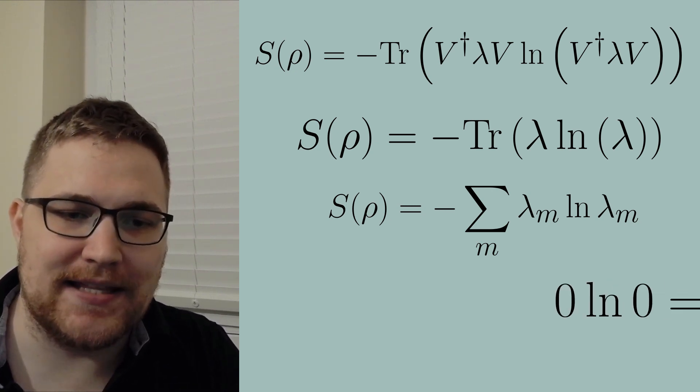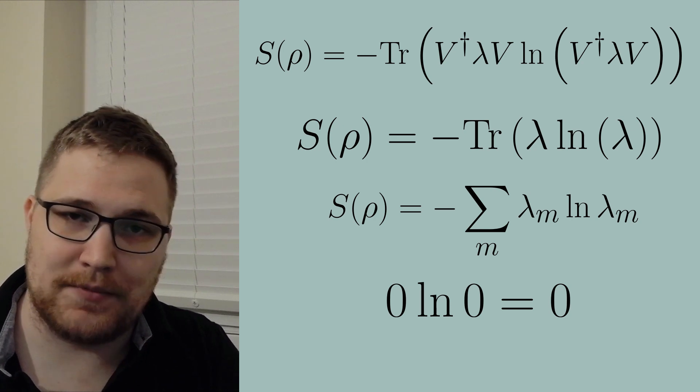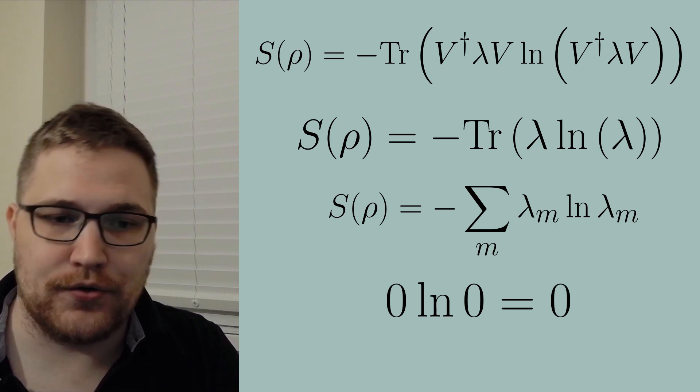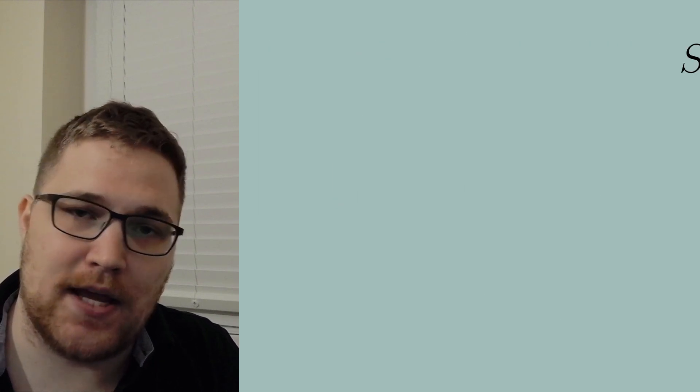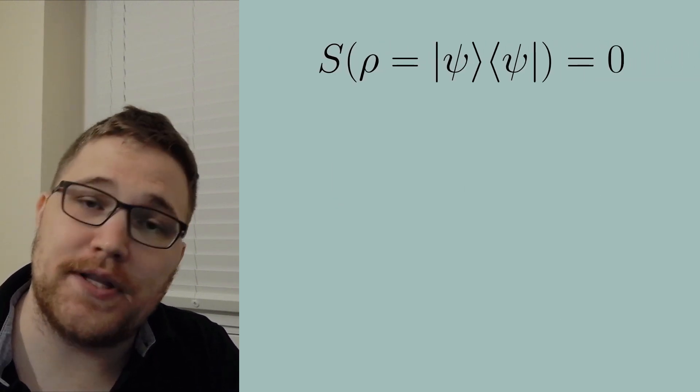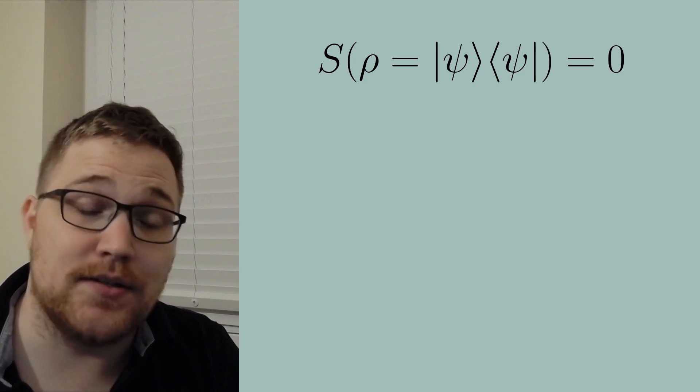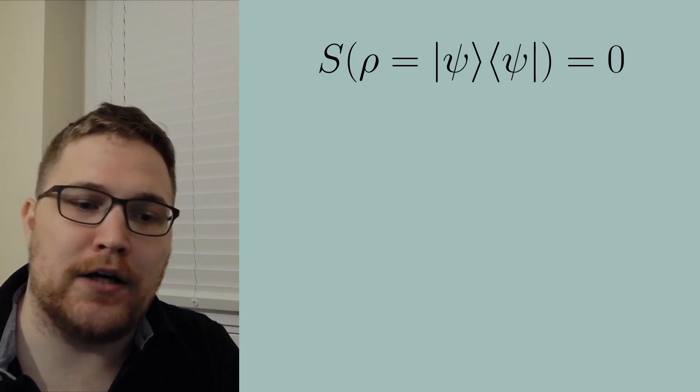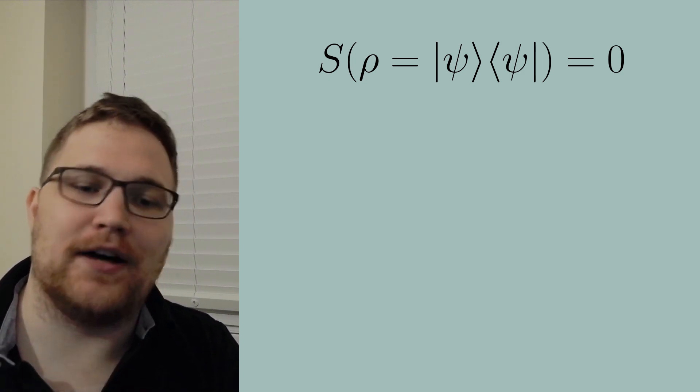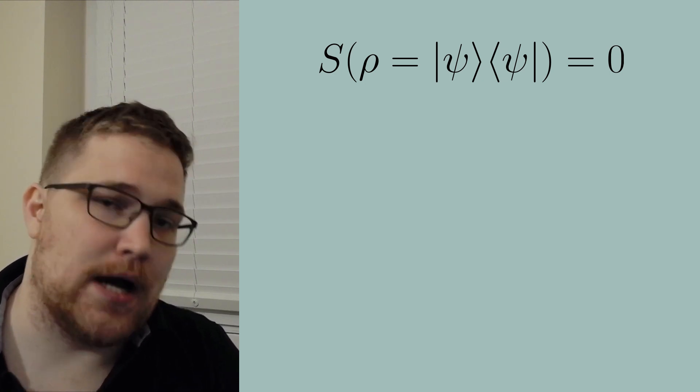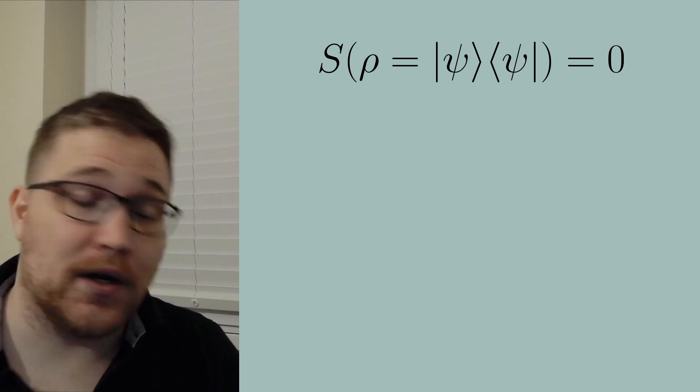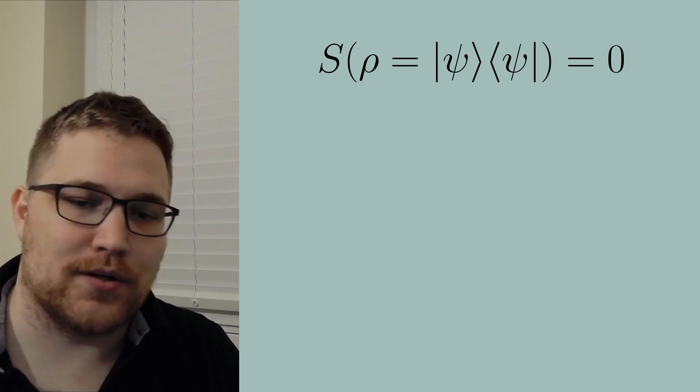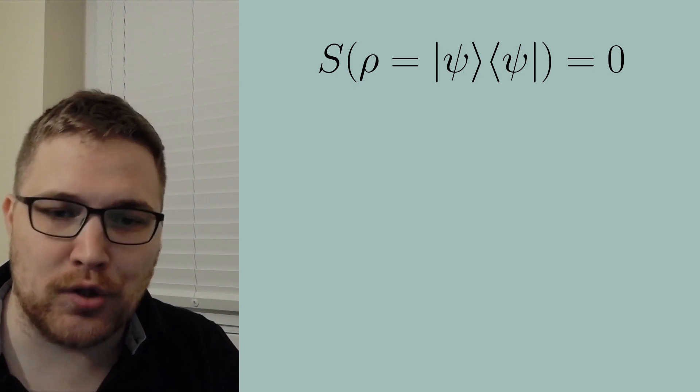Now note that we are going to take the convention that zero times the natural logarithm of zero is equal to zero here. So this observation has a few consequences. Firstly it means the entropy of a pure state is zero since it will have one eigenvalue with the value of one and the rest of the eigenvalues will be zero. The von Neumann entropy is in fact a quantifier of how mixed our state is, similar to the purity I discussed earlier.